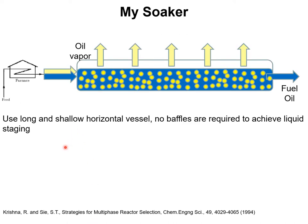In my analysis of the soaker internals and soaker configurations, the wish list set up in the previous slide can be met entirely by having a soaker configuration in which the two-phase mixture — vapor colored yellow, liquid colored blue — is introduced into a horizontal, unbaffled vessel. By making the horizontal vessel long enough and maintaining the height of the vessel to be short, in other words using a shallow horizontal vessel, this would automatically introduce staging into the liquid phase.